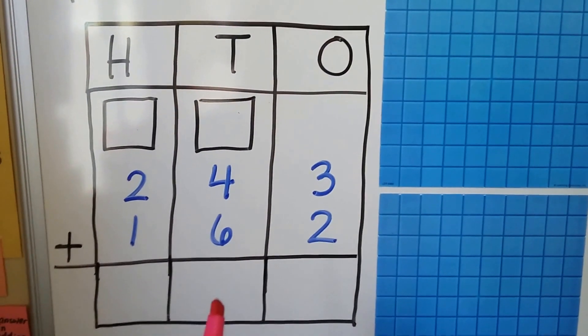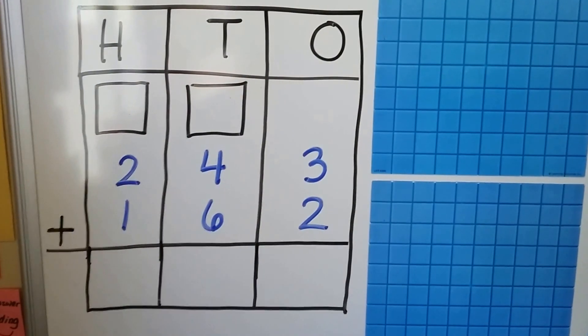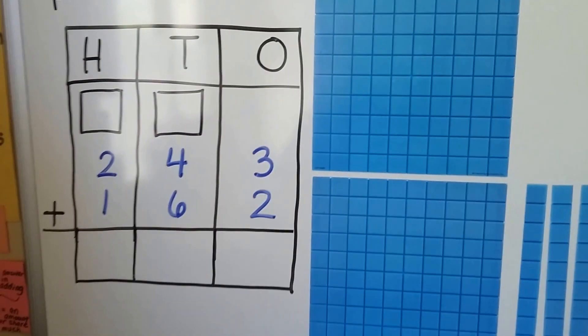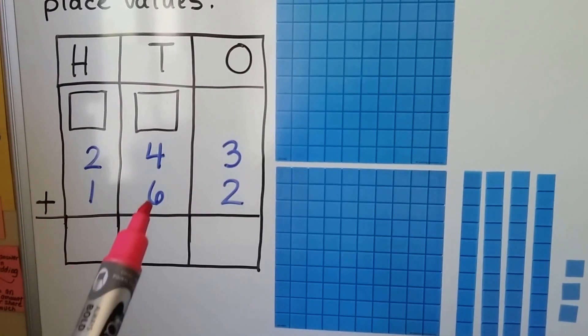So this is just like the two-digit one, except now we have another place value, okay? So we're going to be adding 243 plus 162.